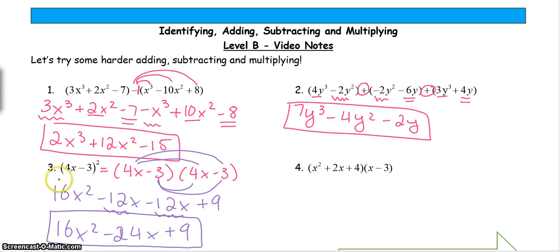It's really, really important that whenever you have a binomial squared, you rewrite it as the parentheses times itself. This is not the same thing as just squaring each term. You'll miss this middle part down here. So you have to make sure you rewrite it like this.